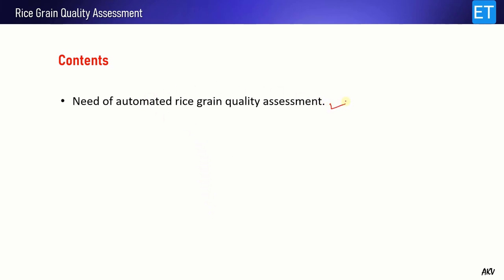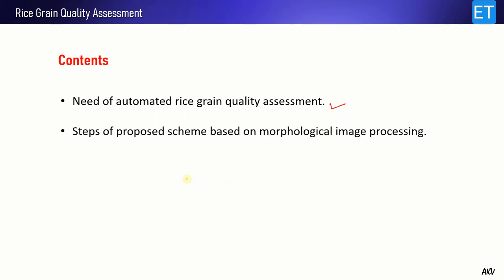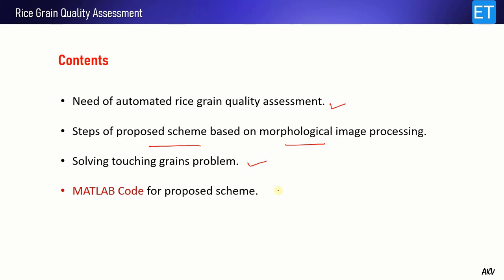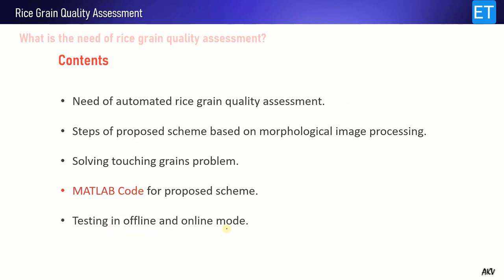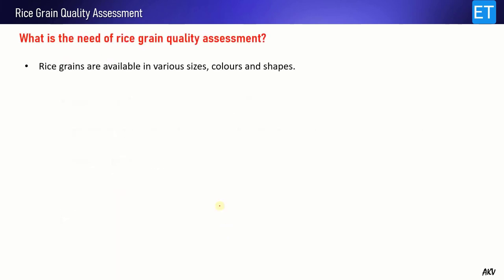First I will explain the need for automated rice grain quality assessment, then I will explain the various steps of the proposed scheme which is based on morphological image processing, then I will explain how to solve the problem of touching grains, then we will discuss the MATLAB codes to implement this scheme, and finally we will rigorously test this MATLAB code for offline and online mode.